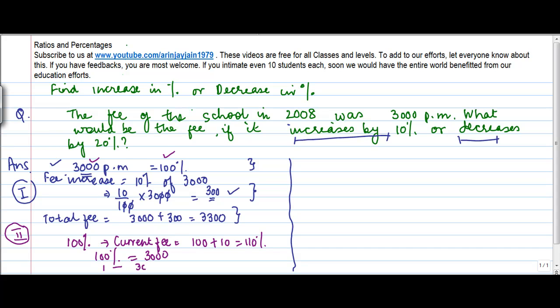1% therefore will be equal to 3000 divided by 100 which gives us how much? 30. So 110% will be equal to how much? 110 into 30 or 3300. And what I notice is that even this number is same as this number.